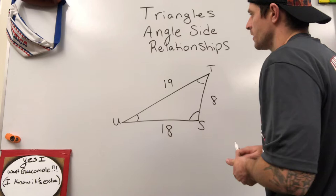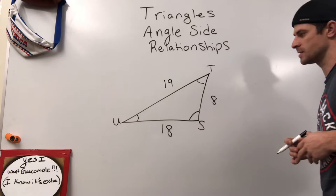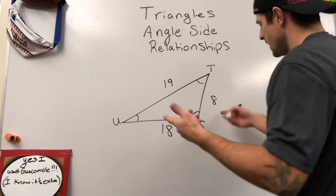All right, we want to be able to tackle any question that could be asked here involving the relationship between angles and sides. So let's talk about what that relationship is. First, you want to determine which value is the smallest or the largest. And I like to actually label them.